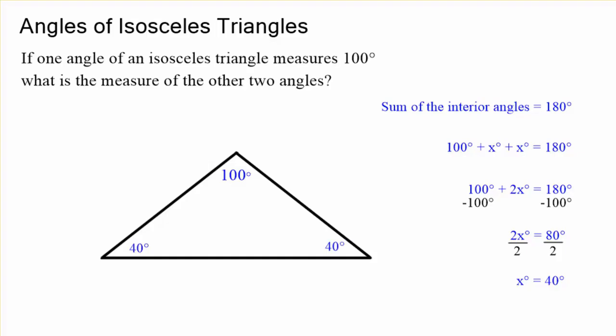So remember, if they're asking you for the angles of an isosceles triangle, just remember the base angles are equal to each other. They can both be x. And the sum of the interior angles always equals 180 degrees.